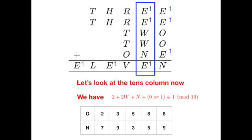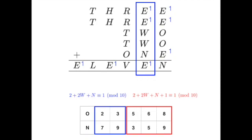After this, we can look at the tens column. We see that 2 plus 2W plus N plus either a 0 or 1, depending on whether there's a carryover from the units digit column, must end in digit 1. So again, we can write the congruence equation denoted in red and blue. Note that the blue equation is a case where there's no carryover, but the red equation denotes a carryover of 1 from the units digit.